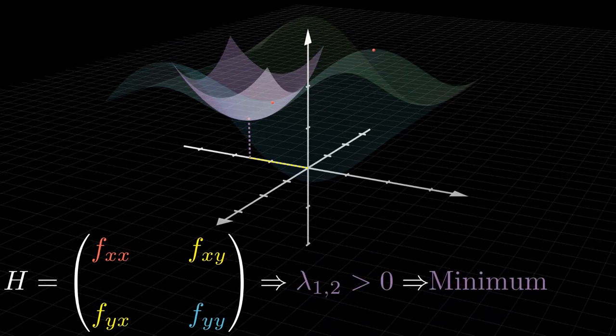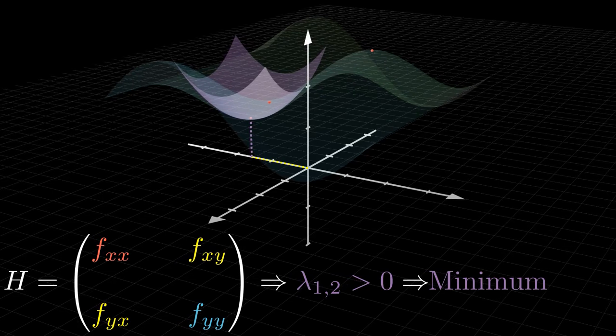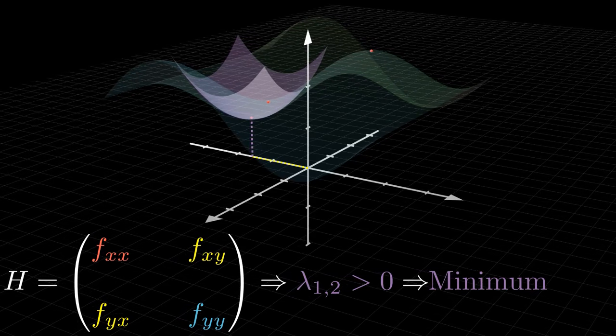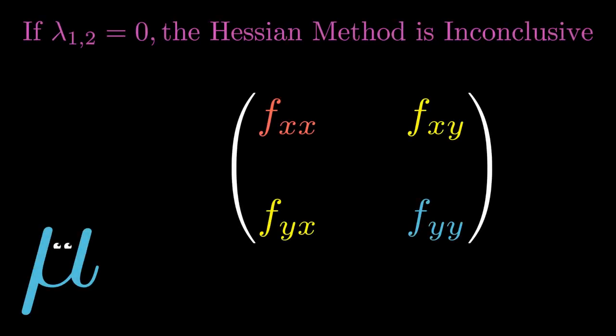This is a very useful technique, but we could ask ourselves, can it happen that we have a null eigenvalue? Yes, it can. This case is particular because it makes the Hessian method inconclusive, since we are unable to understand the sign of the matrix. So, how do we get out of this? Well, we have to use a trick that it's easier to explain if we go back to 2D.